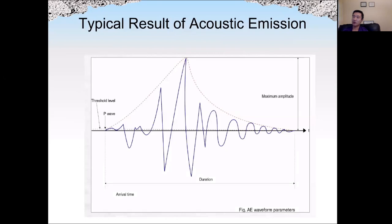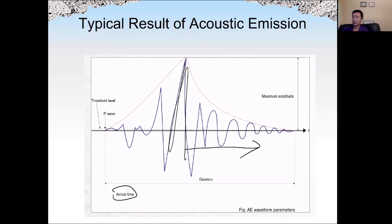The typical result of acoustic emission shows the time when the wave arrives, its amplitude, and also the frequency of the wave. To summarize, all these methods we discussed — such as impact method, ultrasound, and acoustic emission — are based on mechanical waves.